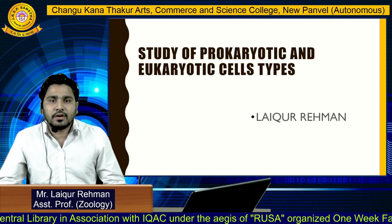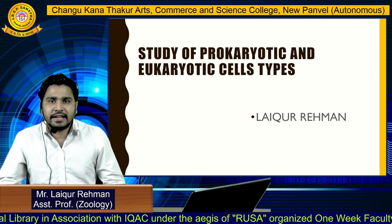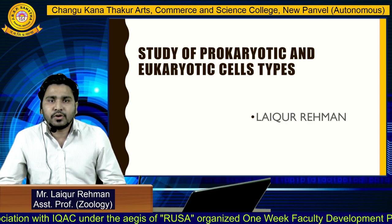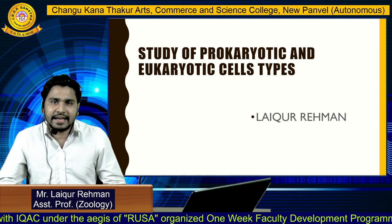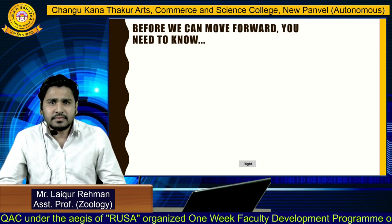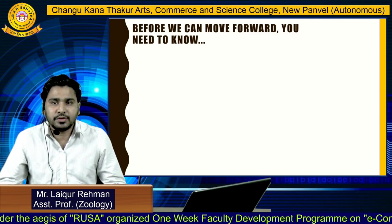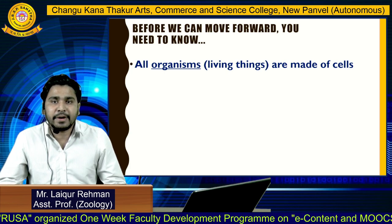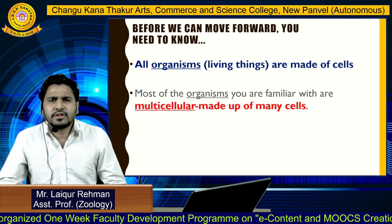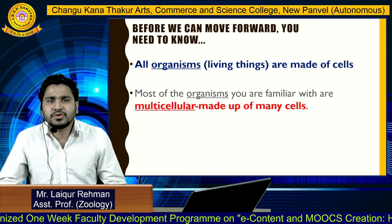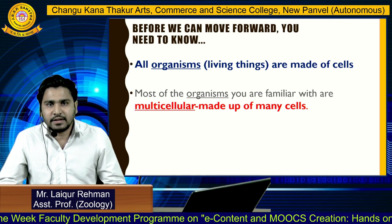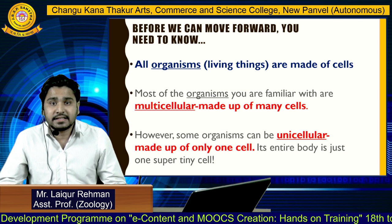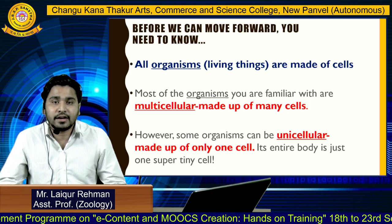Hello and welcome. Today we are going to study prokaryotic and eukaryotic cell types. Before we move forward, you need to know that all organisms — living things — are made of cells. Most of the organisms you are familiar with are multicellular, made up of many cells. However, some organisms can be unicellular, made up of only one cell.